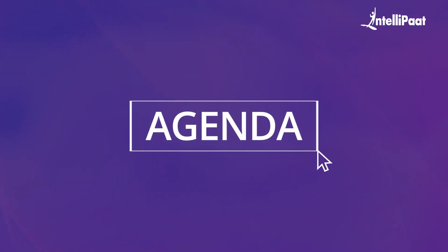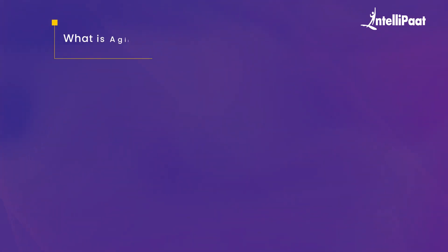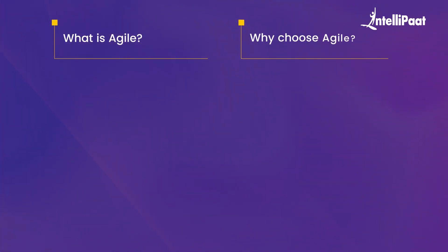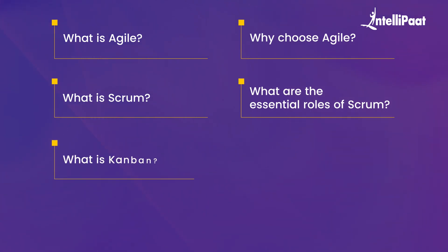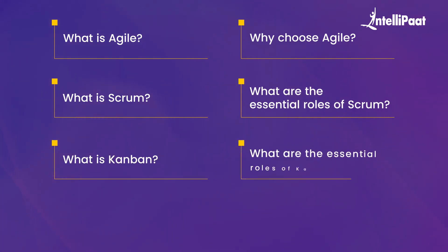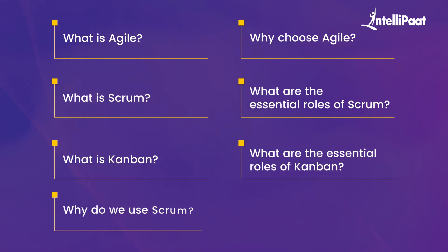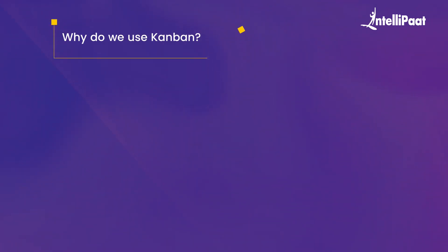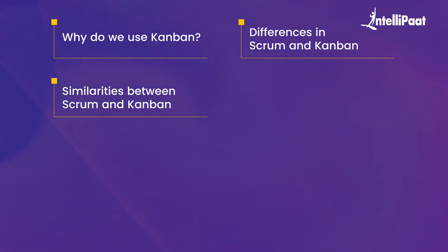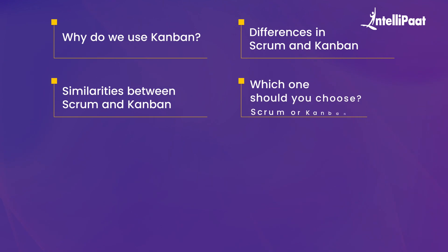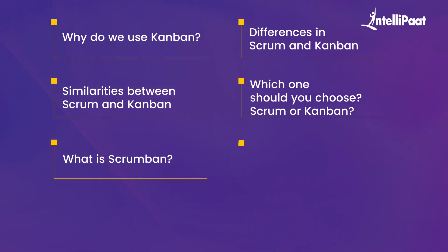Here's a look at the agenda of the video. First, what is Agile? Second, why choose Agile? Third, what is Scrum? Then we talk about the essential roles for Scrum, what is Kanban, and the essential roles of Kanban. Then why do we use Scrum, why do we use Kanban, the differences and similarities between Scrum and Kanban, which one you should choose, what is Scrumban, and why we use Scrumban.